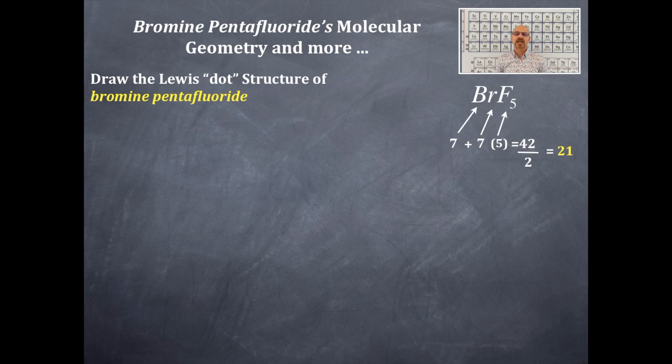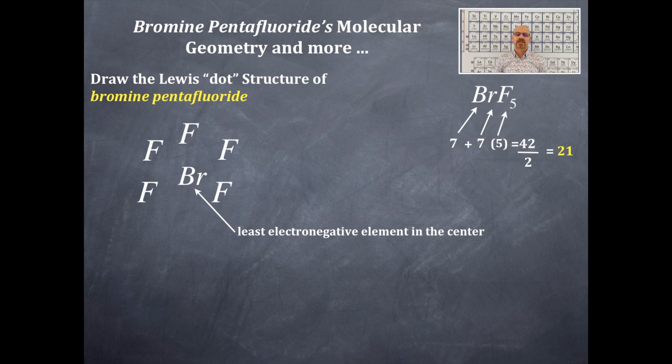The least electronegative element goes in the middle, that's bromine. Fluorine surrounds it. Now the question is, is bromine period three or greater? It most certainly is, and that's why I can fit all those fluorines around it. It is hypervalent.